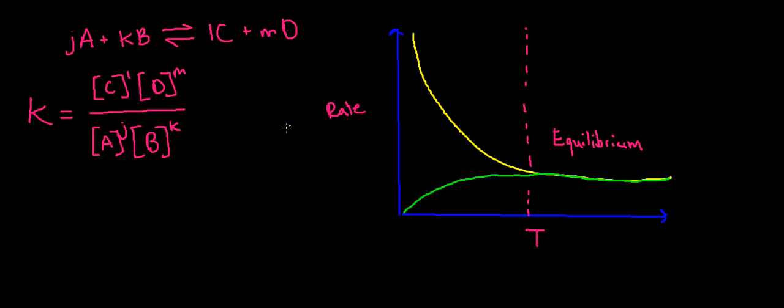So here's a graph. Suppose that this is the rate at which A plus B goes to C plus D. And this green one is C plus D going to A plus B.